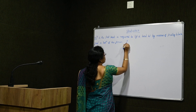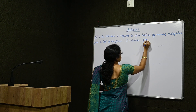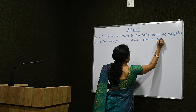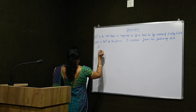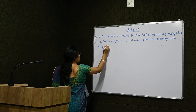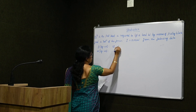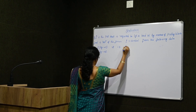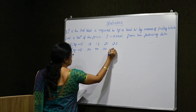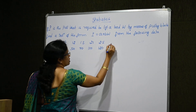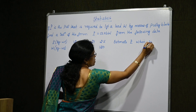P is equal to A plus BW. From the following data: P in kg weight is 12, 15, 21, 25 and W in kg weight is correspondingly 50, 70, 100, 120. Estimate the value of P when W is equal to 150 kg.